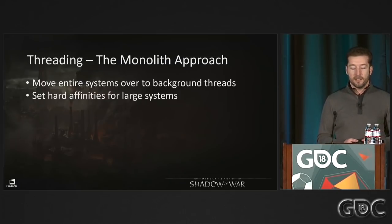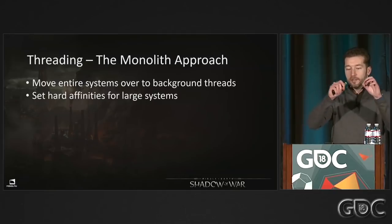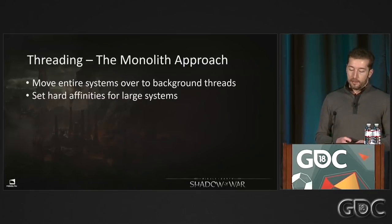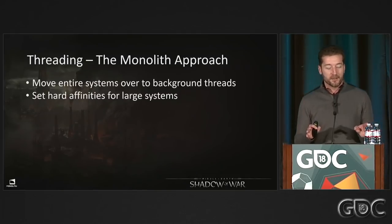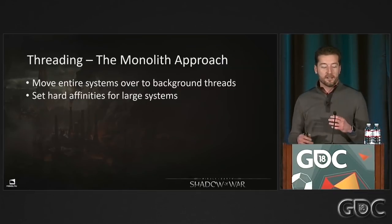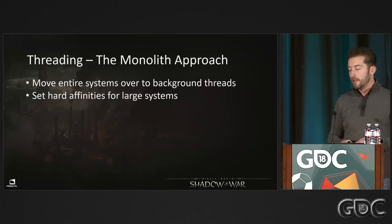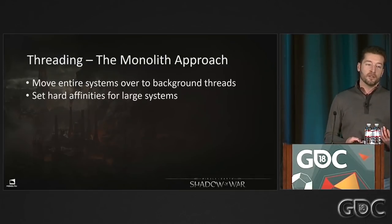There are downsides to this approach. Unlike a traditional fine-grained job system, these large jobs don't pack neatly. Also — and I almost forgot this one — if you get a new console with 12 cores instead of 6, it doesn't scale. You can't pop Shadow of War in and take advantage of all 12 cores because we've mapped things individually. We'd have to go back and remap and likely re-thread everything. So it doesn't scale, but for this product and this hardware, it worked for us.